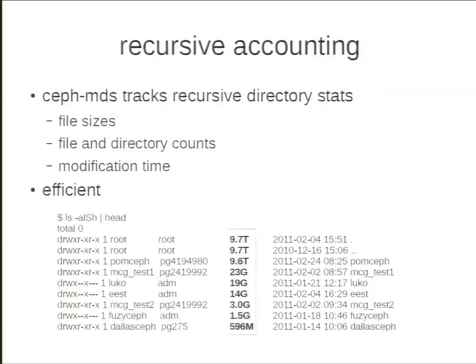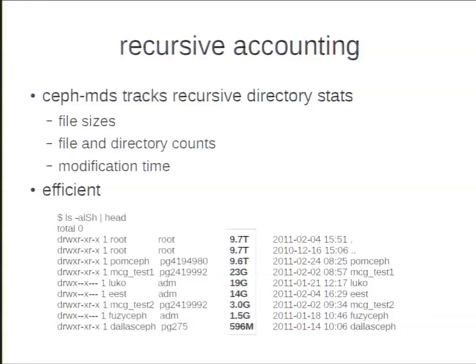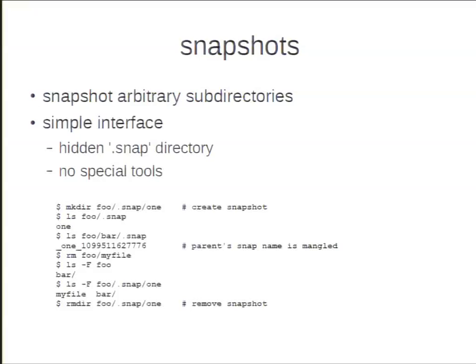CephFS has interesting features built in from the ground up. One is recursive accounting — the metadata servers keep track of recursive directory stats for every directory. So when you do an ls -al, the file size shown for a directory is the total number of bytes stored in that directory recursively — essentially what you'd get from du, but in real time. CephFS also supports per-directory snapshots. Once you're talking about petabytes or exabytes, you need to snapshot different directories and datasets independently. In Ceph you can create a snapshot on any directory and it affects just that subtree, using standard bash-type commands.